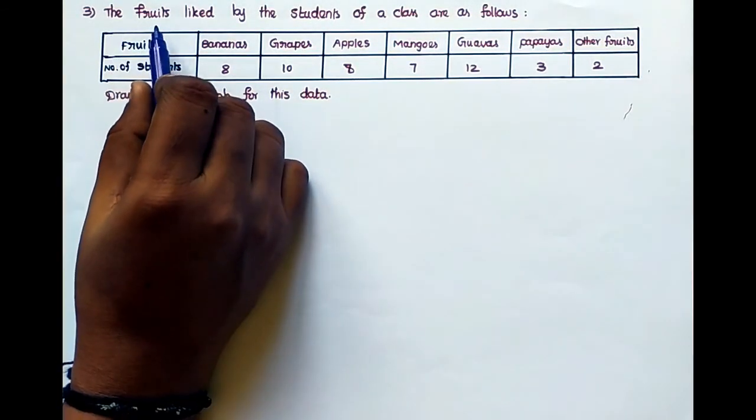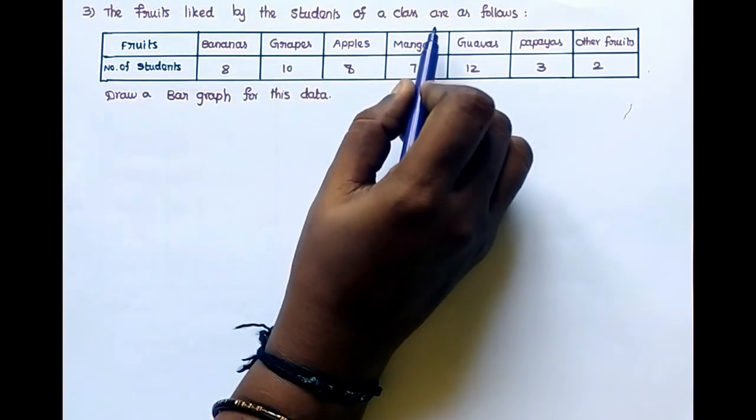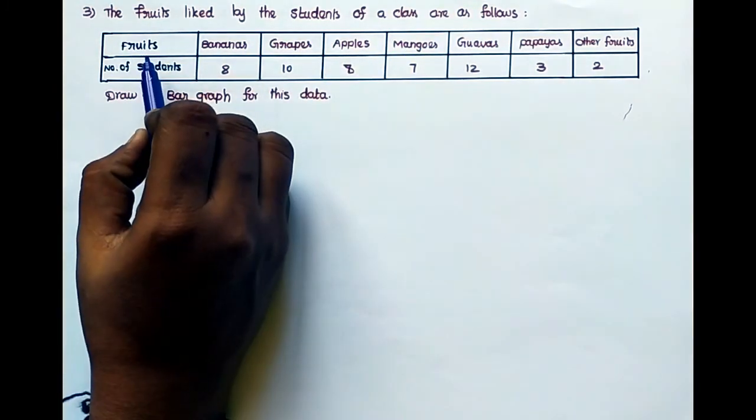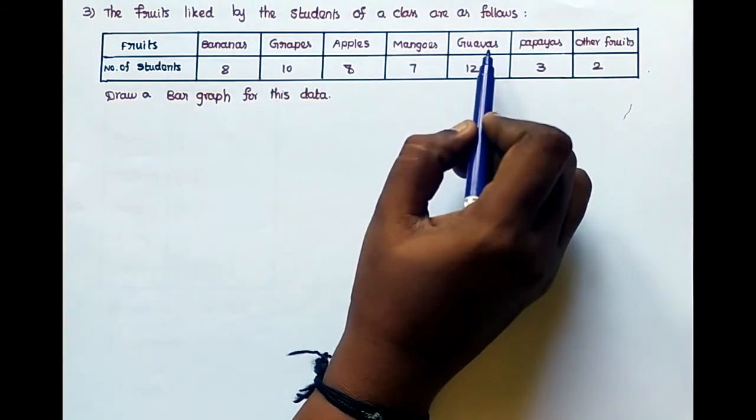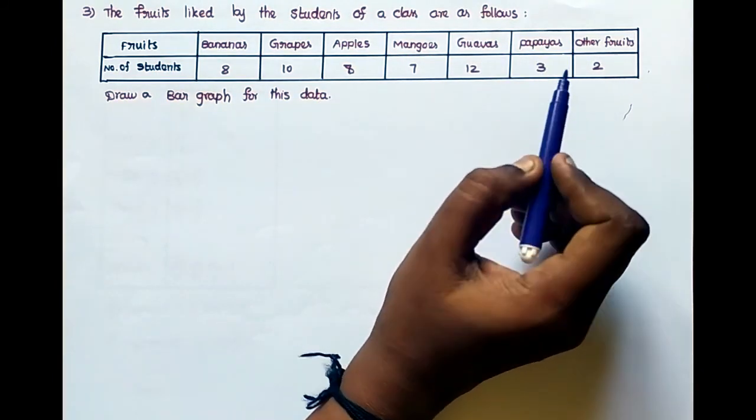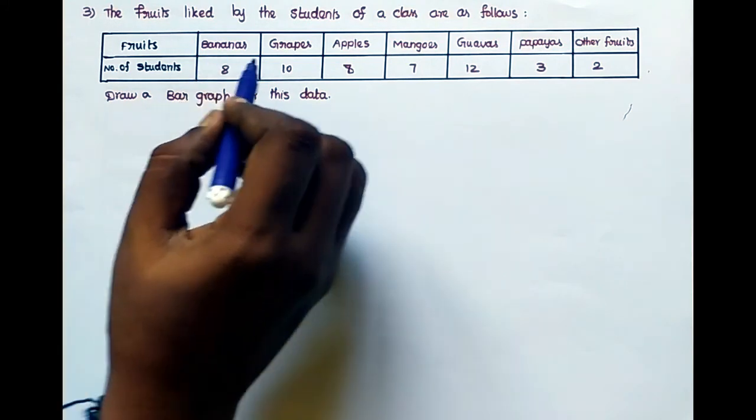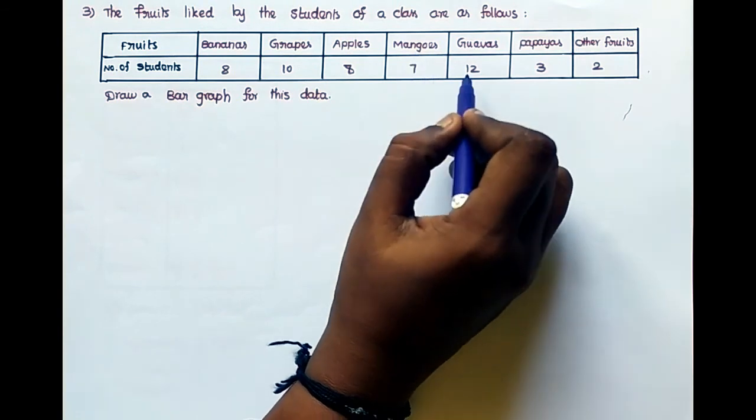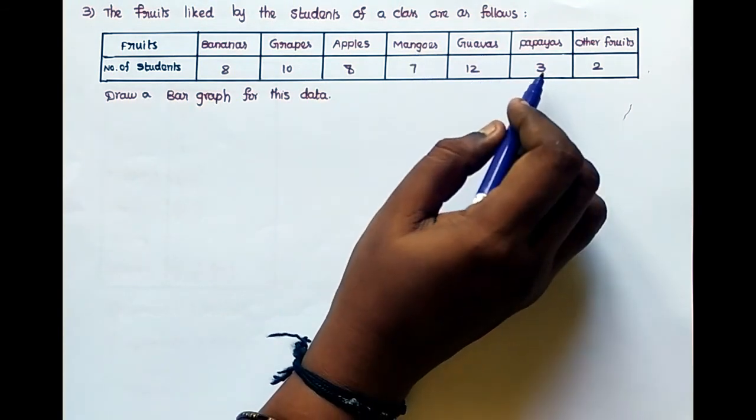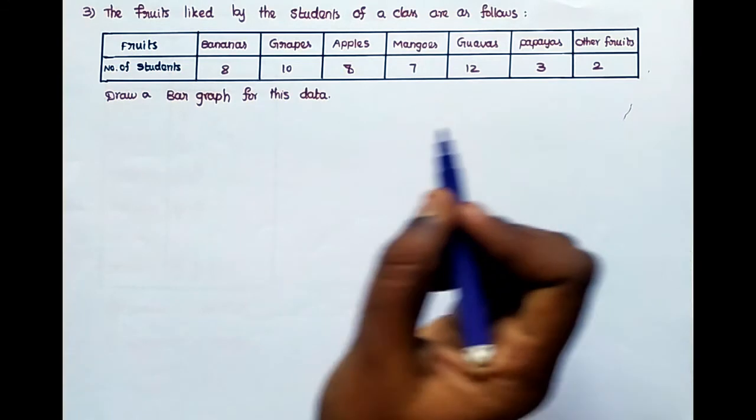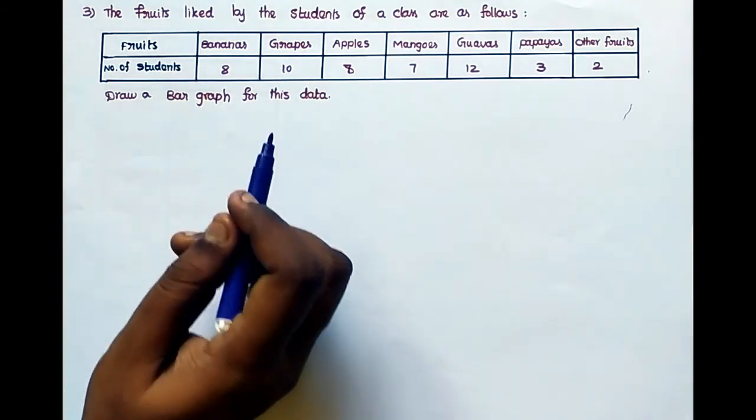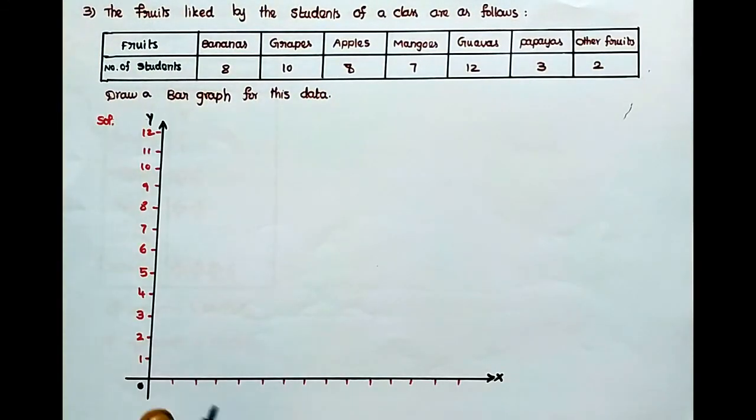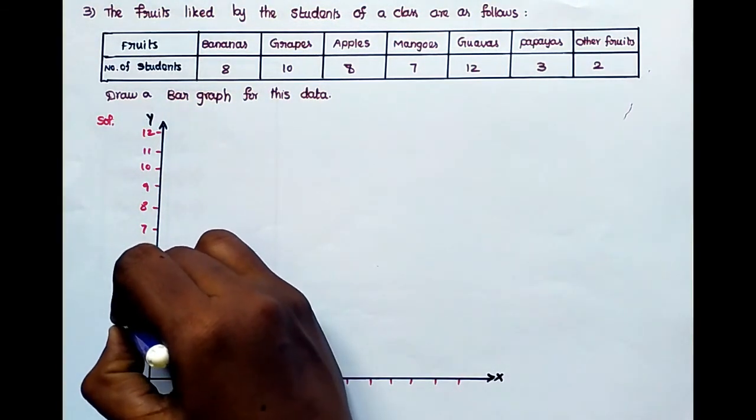Third sum. The fruits liked by the students of a class are as follows. Fruits: bananas, grapes, apples, mangoes, guavas, papayas, other fruits. The number of students: 8 students liked banana, 10 students grapes, 8 students apples, 7 students mangoes, guavas 12 students, papayas 3, other fruits 2. Draw a bar graph for this data. This is the fruits, these are the number of students.